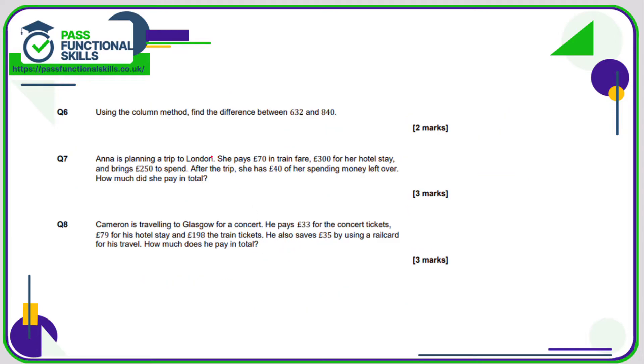So question six, again no calculator. We've been told to use the column method, so the difference means subtract. So I'm going to take away the smaller number from the bigger number. So two from zero, or zero minus two. Well, that is impossible. Zero minus two is not two, by the way. So when the number on the bottom is bigger than the number on the top, we need to borrow from the column to the left.